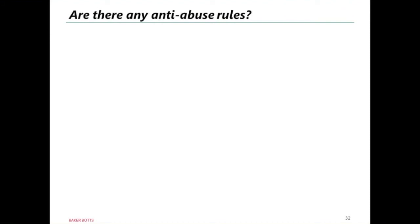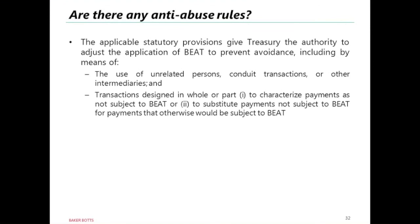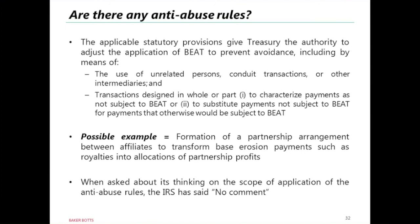Perhaps one of the biggest questions relating to BEAT is what Treasury and the IRS might do with a broad grant of regulatory anti-abuse authority. The anti-abuse authority for BEAT allows the IRS to adjust the application of BEAT to prevent avoidance through the use of unrelated persons, conduits, or other intermediaries, or transactions designed to change payments or their character so they wouldn't be subject to BEAT. An example is transforming an IP license into a partnership arrangement where the licensor receives a share of partnership profits rather than a royalty. Such an arrangement might represent an arm's-length transaction, but if done with the purpose of minimizing BEAT tax, does the taxpayer lose? The IRS response so far has been no comment.